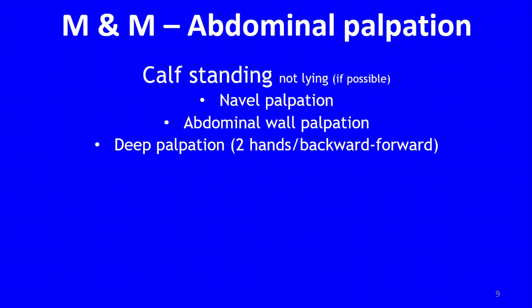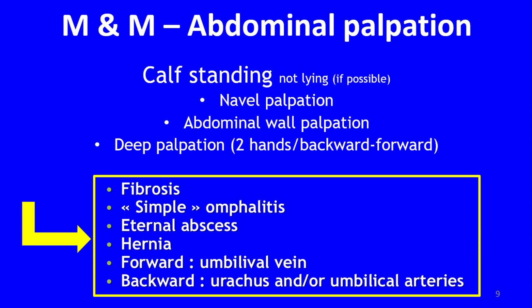We needed a calf standing, not lying if possible, because for the diagnosis of hernia we need the calf to be standing. Navel palpation, abdominal wall palpation, and then deep palpation with two hands backwards and forwards — that is a classical examination. After this first step, the clinician had to classify the case as: simple external fibrosis without inflammatory or infectious disease; simple omphalitis — only infection of the external navel; an external abscess; hernia; or infectious and inflammatory lesion of the vein, artery, or urachus.